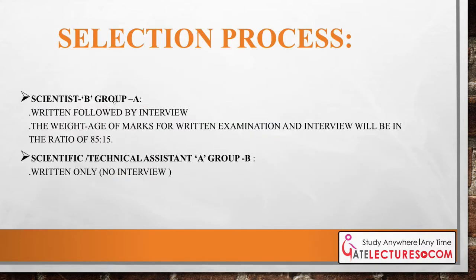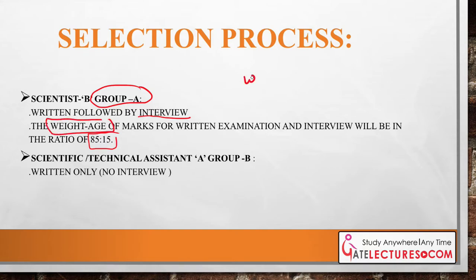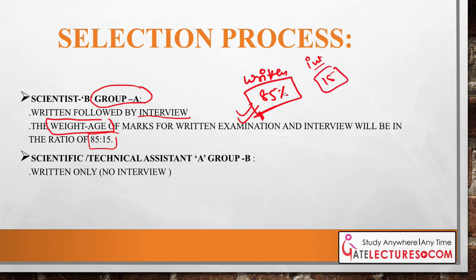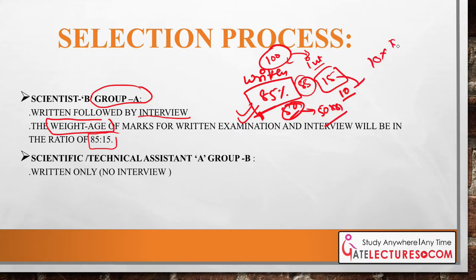The selection process for Scientist B Group A consists of a written examination followed by an interview. The weightage ratio is 85:15 — 85% for the written examination and 15% for the interview. So whatever marks you score in the written exam, 85% of that score will count, and 15% will come from the interview. For Technical Assistant Group B, there is no interview at all.